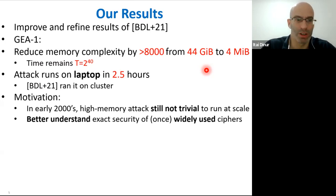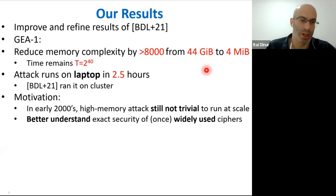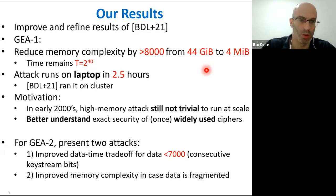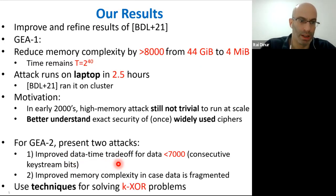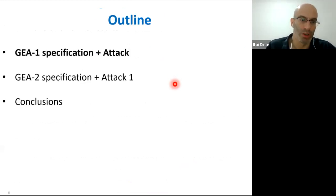Another motivation — a general one for this work — is to better understand the security of ciphers that were at least once widely used. For GEA2, we present two attacks. In this talk I'll focus on just the first attack: we improve the data-time trade-offs from the previous paper, but the improvement applies up to 7,000 bits of consecutive keystream. The techniques we use are borrowed from methods for solving XOR problems.